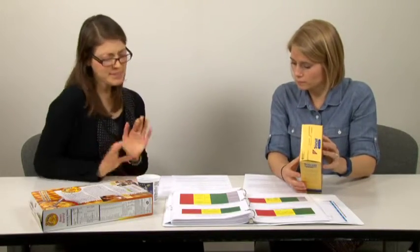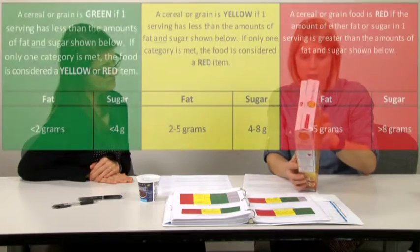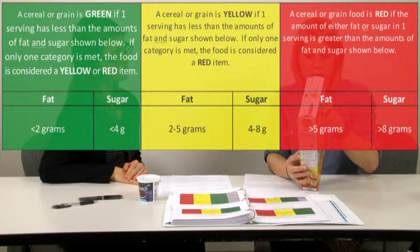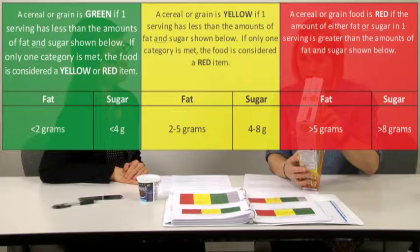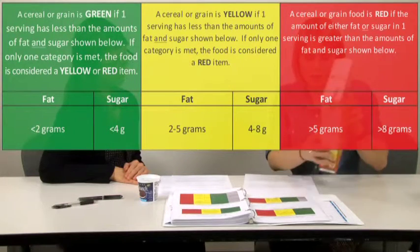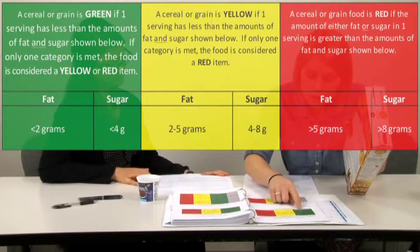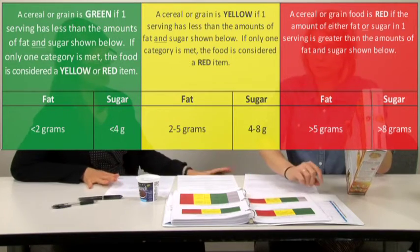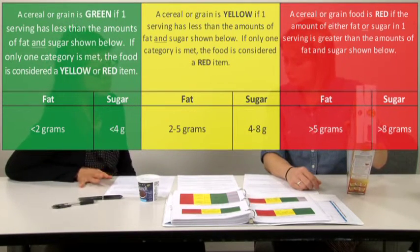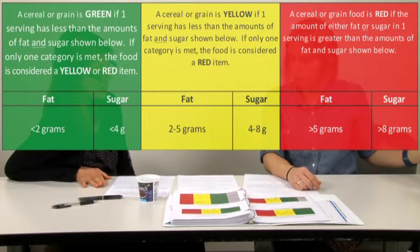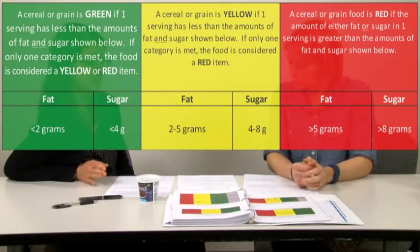All right let's make it a bit harder with something that has added sugars. How about this cereal? Okay let's see here the serving size is three quarters cups, the total fat is 1.5 grams and the sugars are six so if I look at my chart it's yellow. Great I'm glad you understand that you always go with the highest category if the two could fall into two different categories.